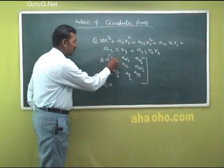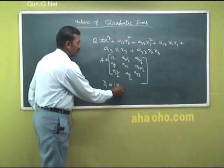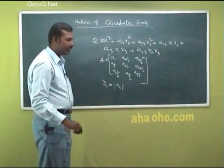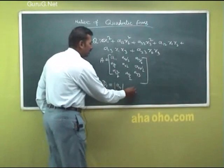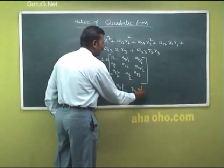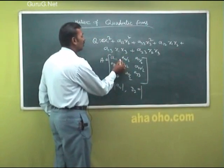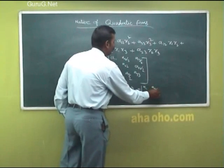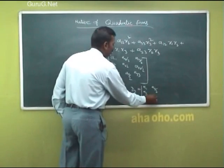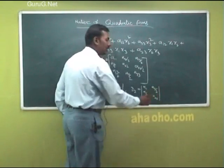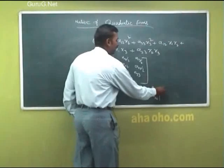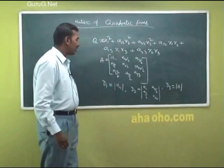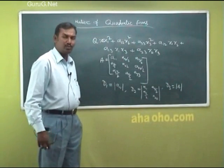D1 is the first element, a₁₁. Check whether it is positive, negative, or zero. Next, D2 is the determinant of the first 2×2 submatrix with elements a₁₁, a₁₂, a₂₁, a₂₂. D3 is the determinant of the full matrix A. So we calculate three values: D1, D2, D3.